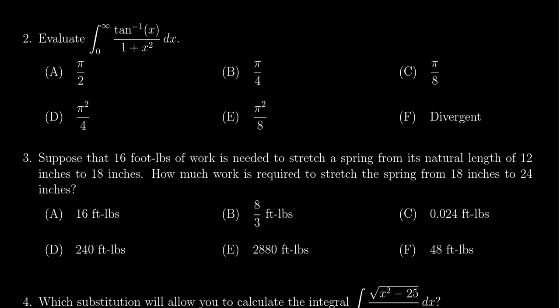That arctangent on top and the 1 plus x squared at first looks impenetrable, but this actually lends itself to a very nice u-substitution. If we take u to be arctangent of x, then its derivative du will be dx over 1 plus x squared.